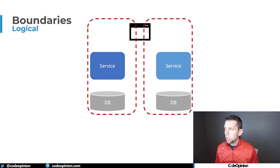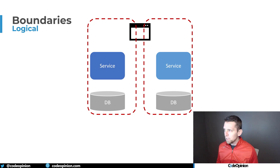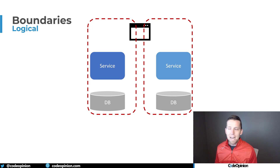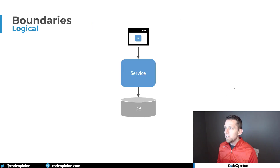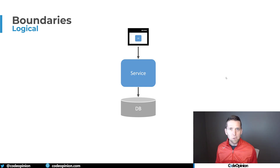So to think about this logically, we want to get rid of those dotted lines referencing the physical aspect. When we think logically, we have two independent services that each have their own database, but they also each own a portion of the UI. This is about the ownership of a set of business capabilities and the data. If you simplify this, think of it as one logical boundary of a service: it's the UI, it's the service, it's the data.